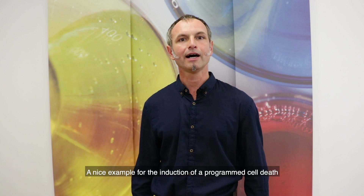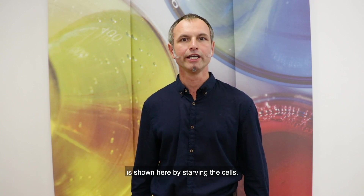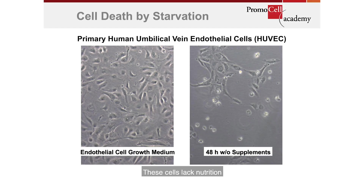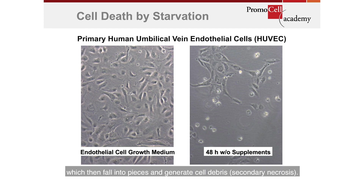A clear example for the induction of programmed cell death is shown here by starving the cells. These cells lack nutrition and after 48 hours they clearly show many apoptotic cells, which then fall into parts and pieces, generating cell debris — so-called secondary necrosis.